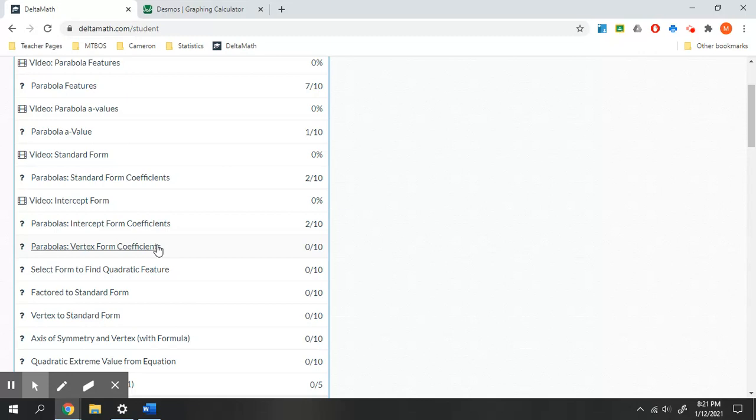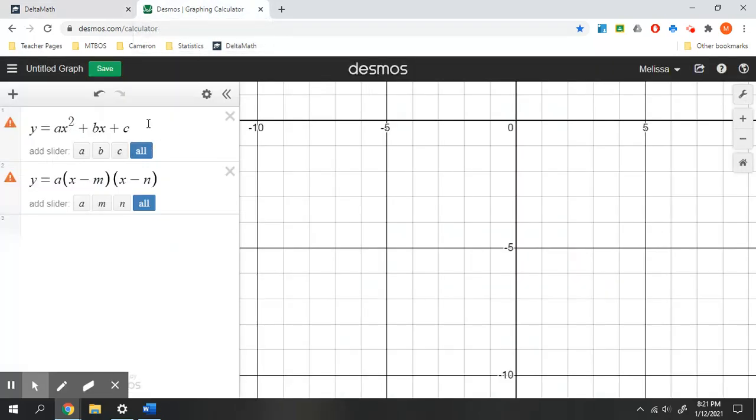No surprise here, vertex form is going to give us the vertex. So here's what we have so far. First, standard form. This gives us our shape and our y-intercept.